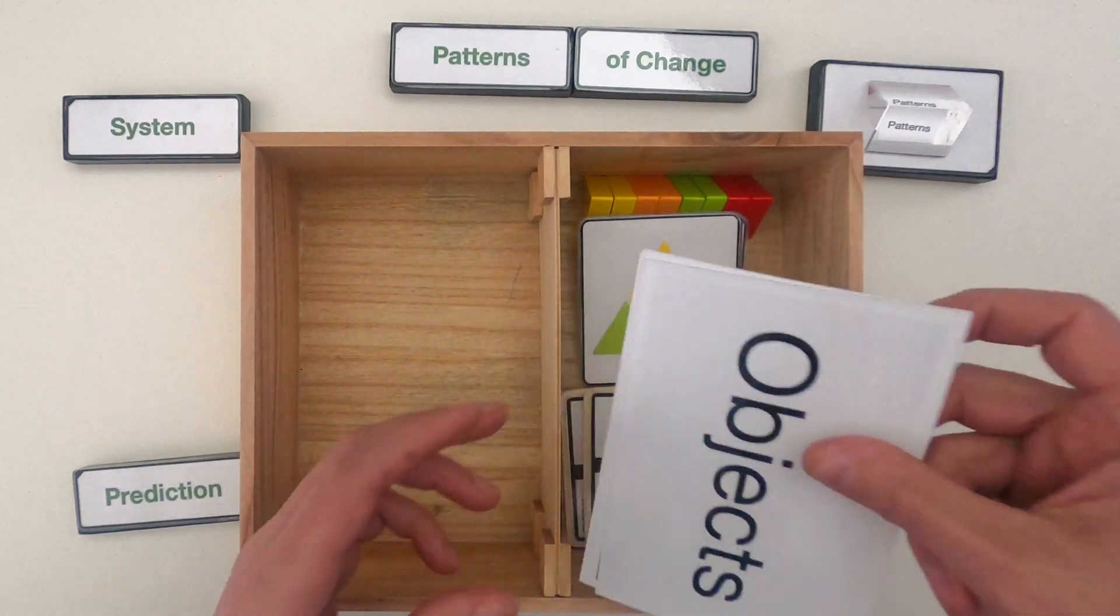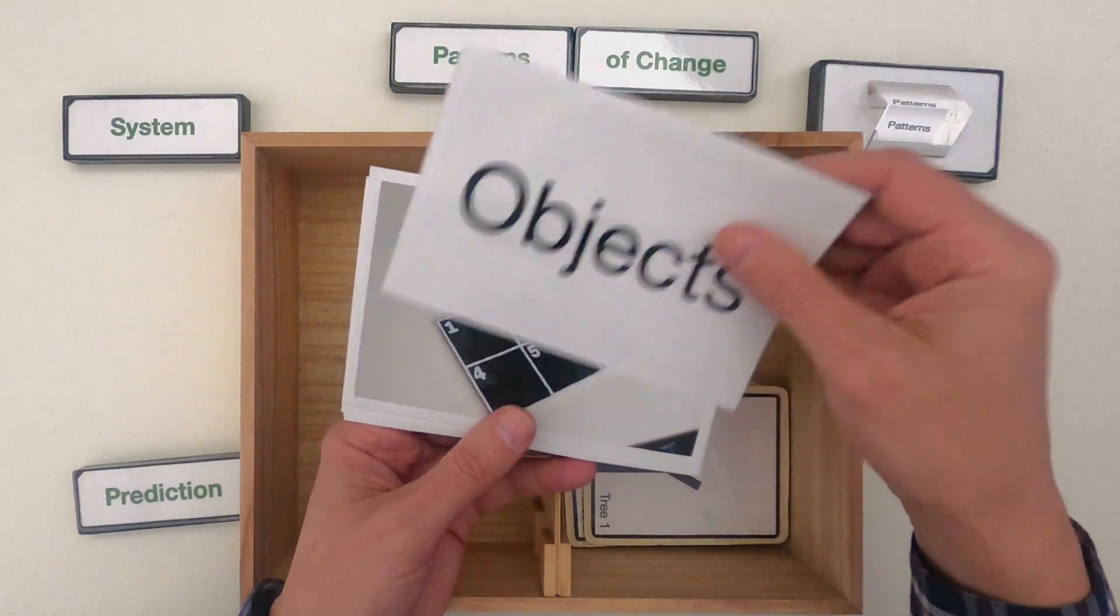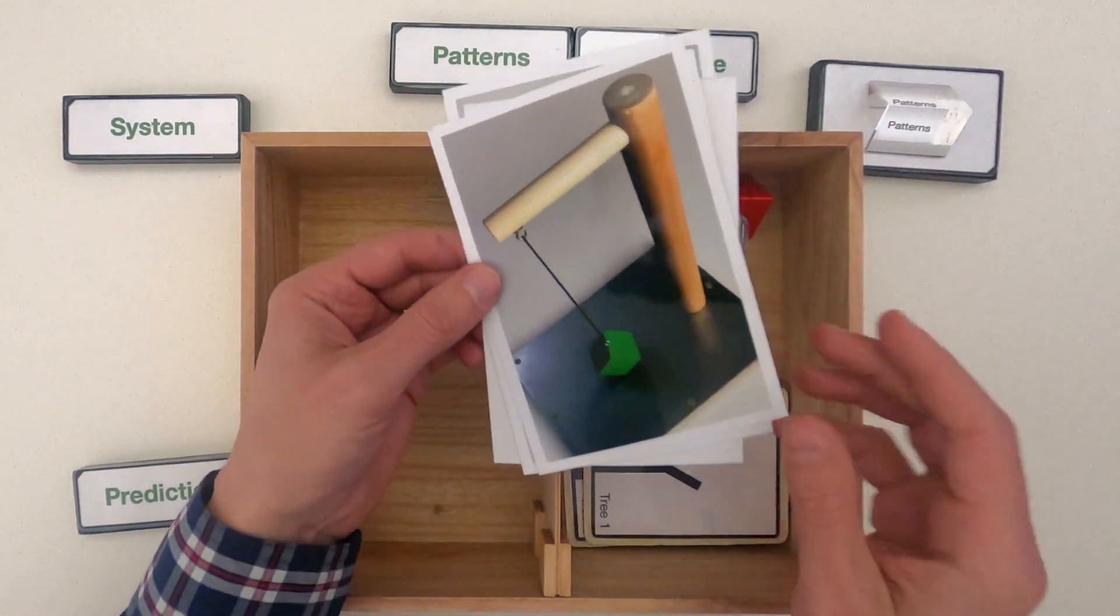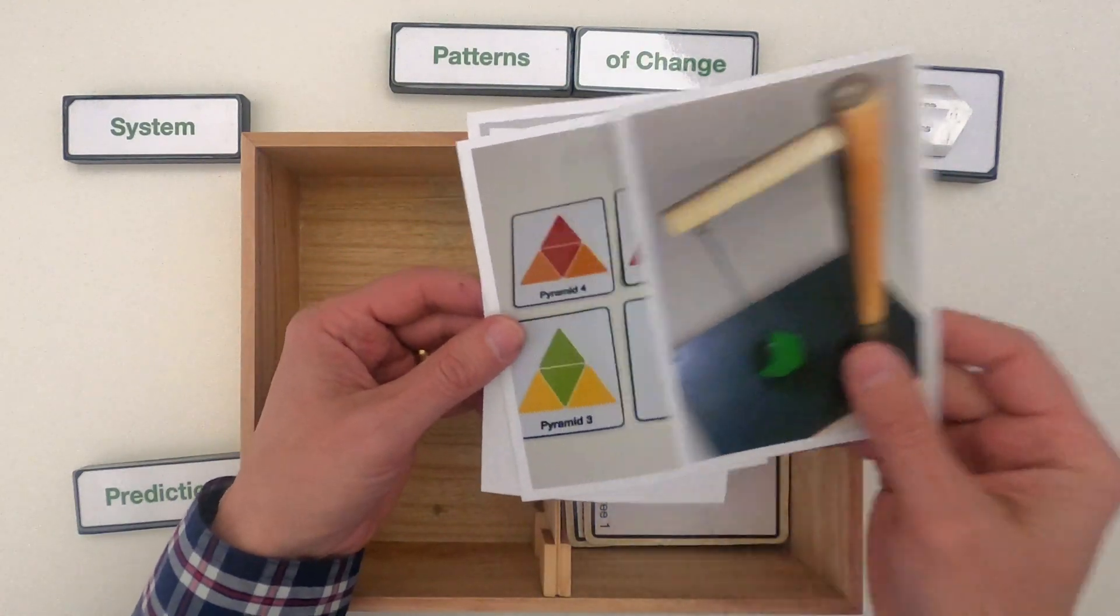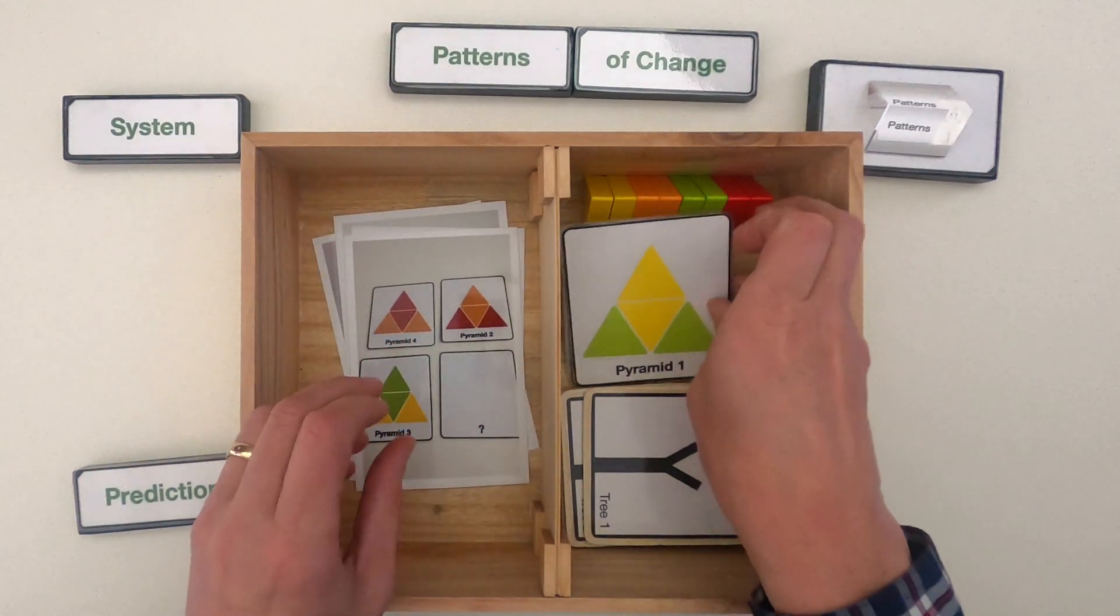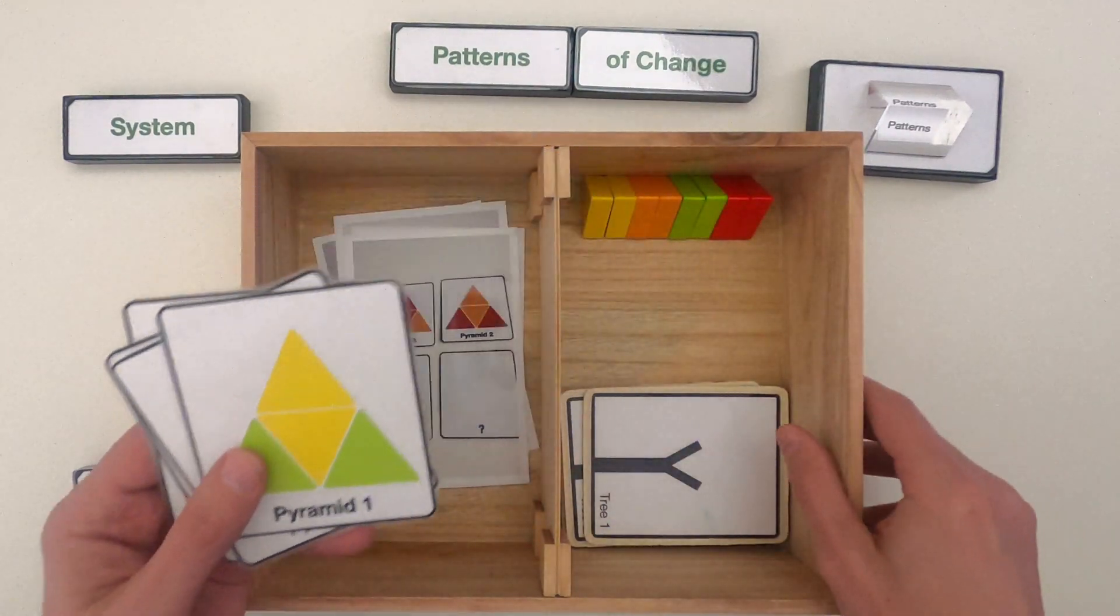After you've watched this video, you should be able to make predictions based on patterns of change in certain events, or in something like the period of a pendulum. But I'm going to start by showing you my thinking as we look at patterns of change in some changing shapes, some pyramids.